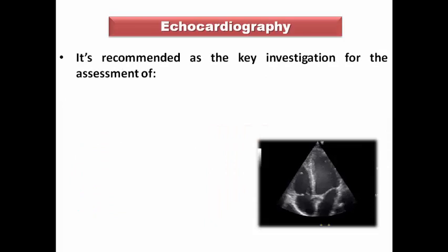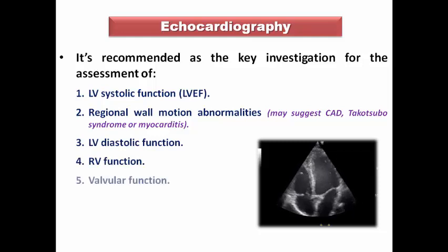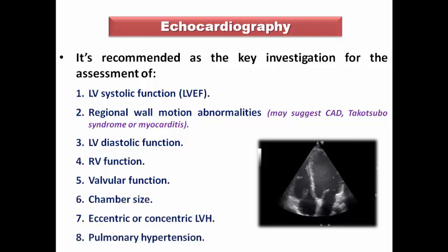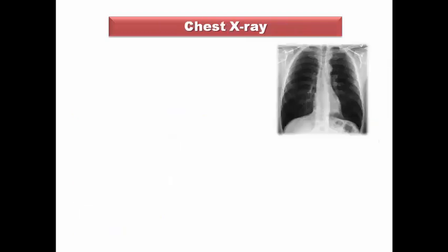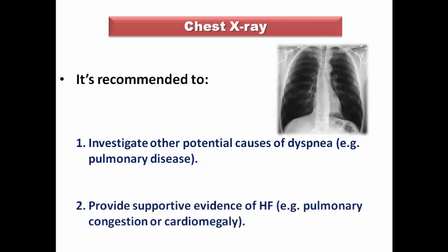Echocardiography is a key investigation for any heart failure patient to assess LV systolic function, resting segmental wall motion abnormalities, LV diastolic function, RV function, valvular function, pericardial disease, and eccentric or concentric LV hypertrophy, as well as pulmonary artery pressure suggesting pulmonary hypertension. Chest X-ray is also recommended to investigate other causes of dyspnea — such as a pulmonary shadow that may co-exist with or solely explain symptoms — and provides supportive evidence like pulmonary congestion signs, Kerley B lines, and cardiomegaly.